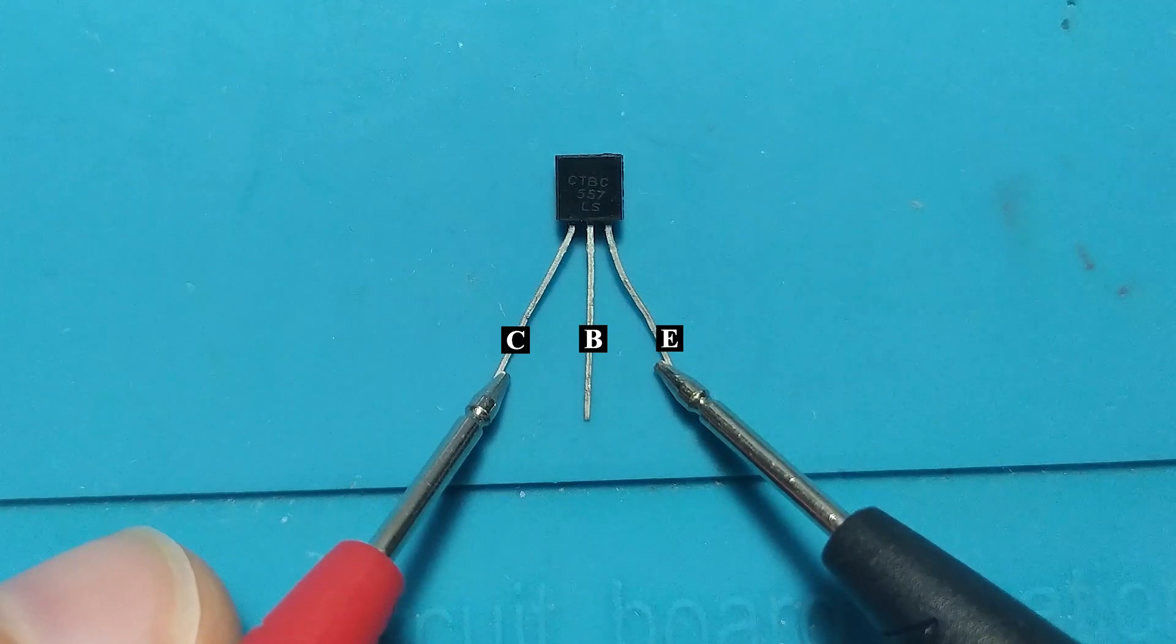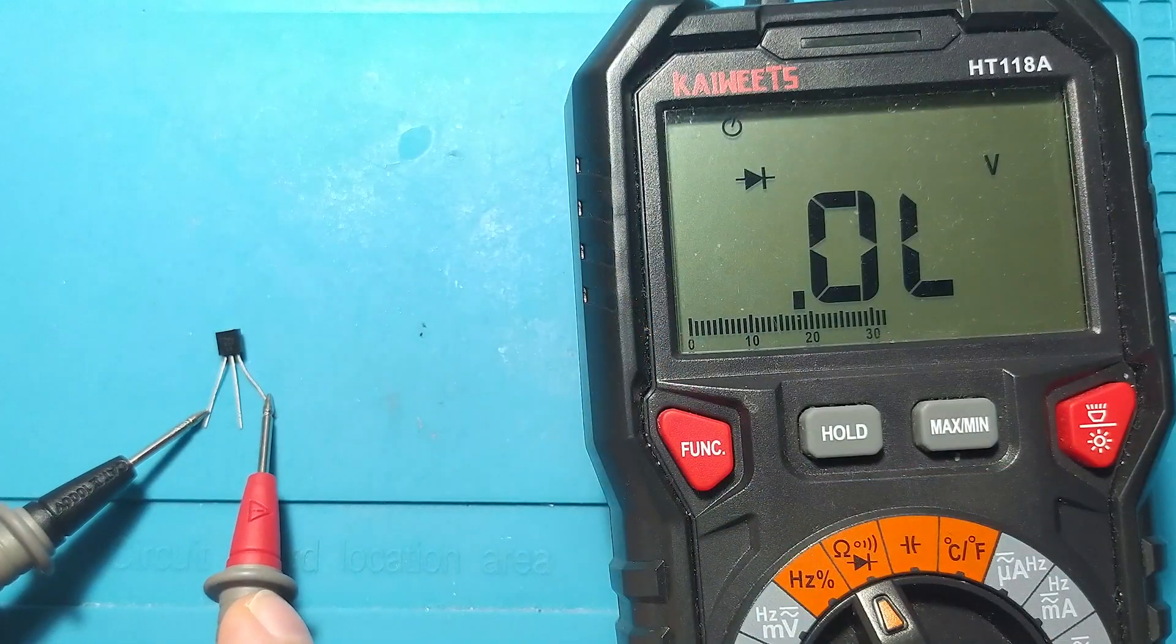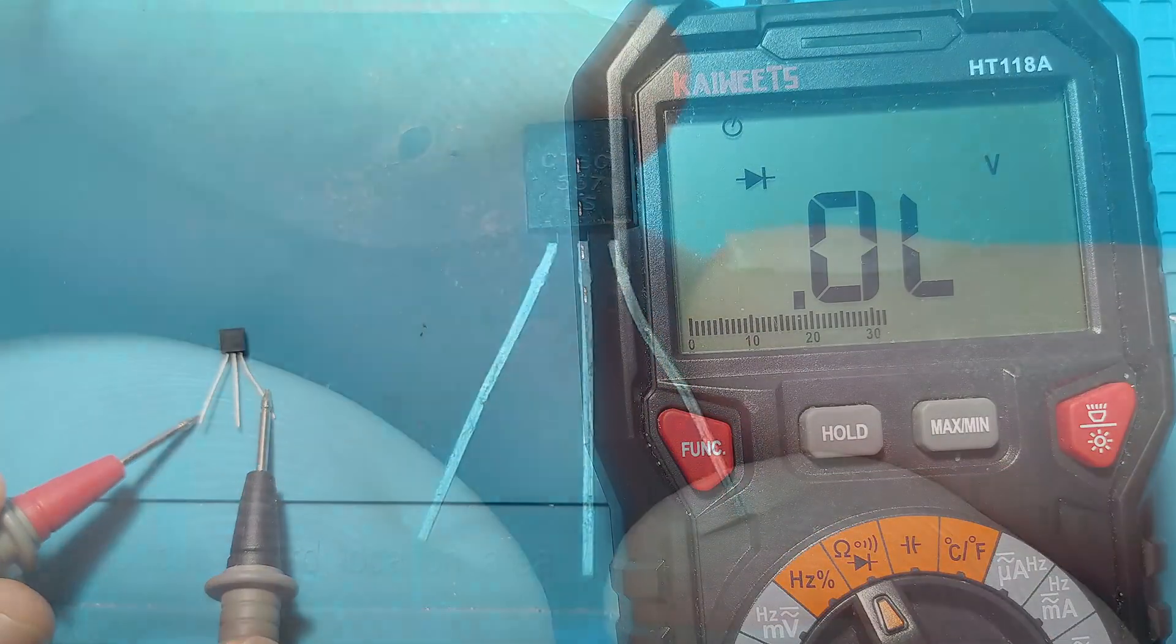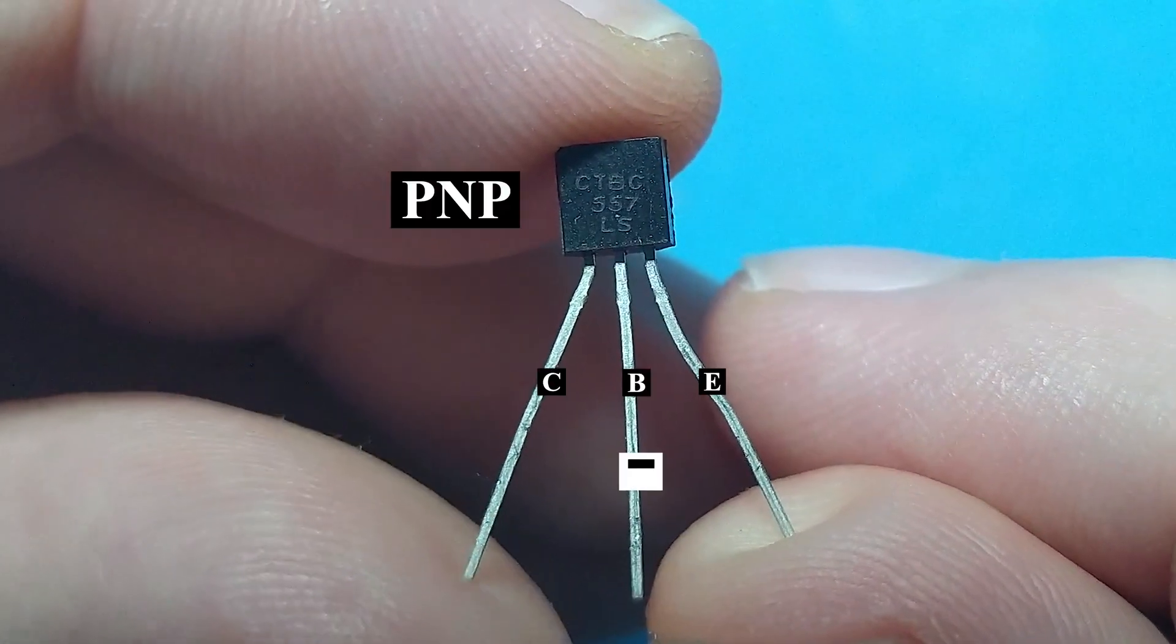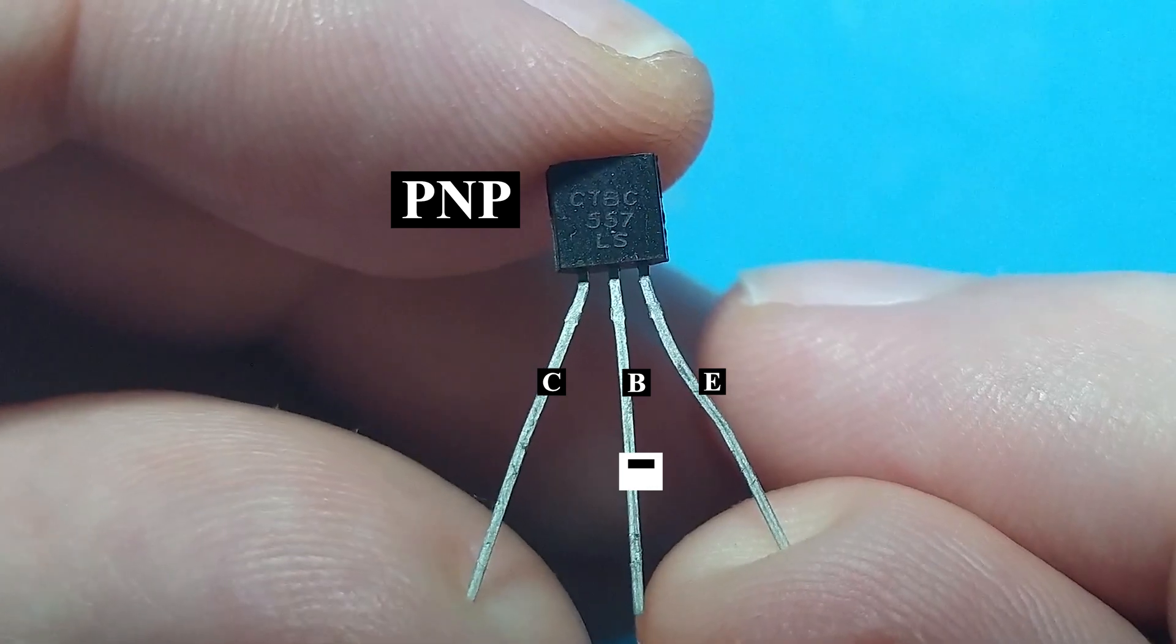Measuring between emitter and collector must not have any voltage drop, regardless of polarity. From these measurements, deduce that the BC557 transistor is of the PNP type, with minus on the base.